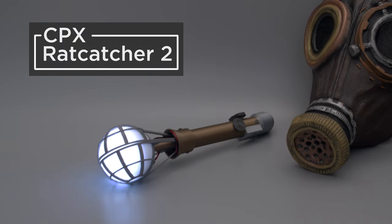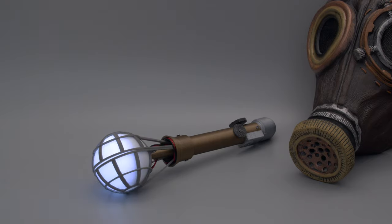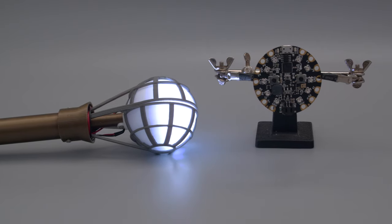The Rat Catcher Communicator is a device used by the Rat Catcher to control and manipulate swarms of rats. We were inspired by the Suicide Squad to 3D print the device and light it up with Adafruit Circuit Playground Express.